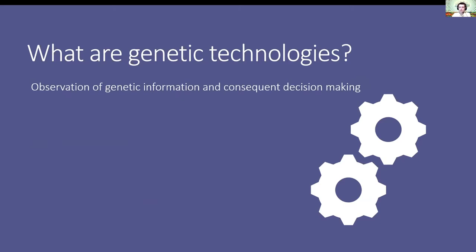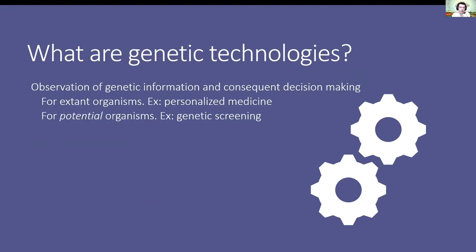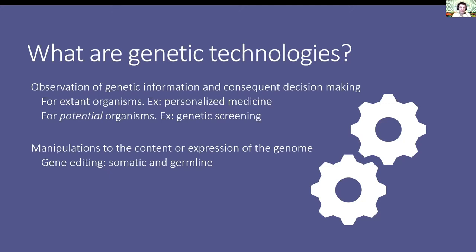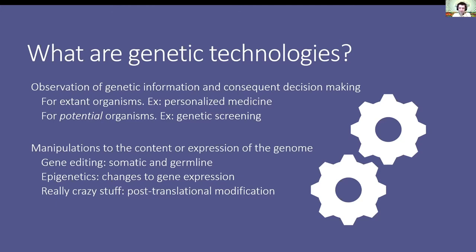Genetic technologies are pretty diverse — they're stuff we do with genes. One category is looking at stuff and figuring out what it does. Personalized medicine could look at someone's genome and develop specific drugs for them. We can also observe the genetics of germ cells and decide which ones to develop into full organisms. Gene editing takes the form of somatic gene therapies or germline editing, and we can also just change how genes are expressed without changing anything.